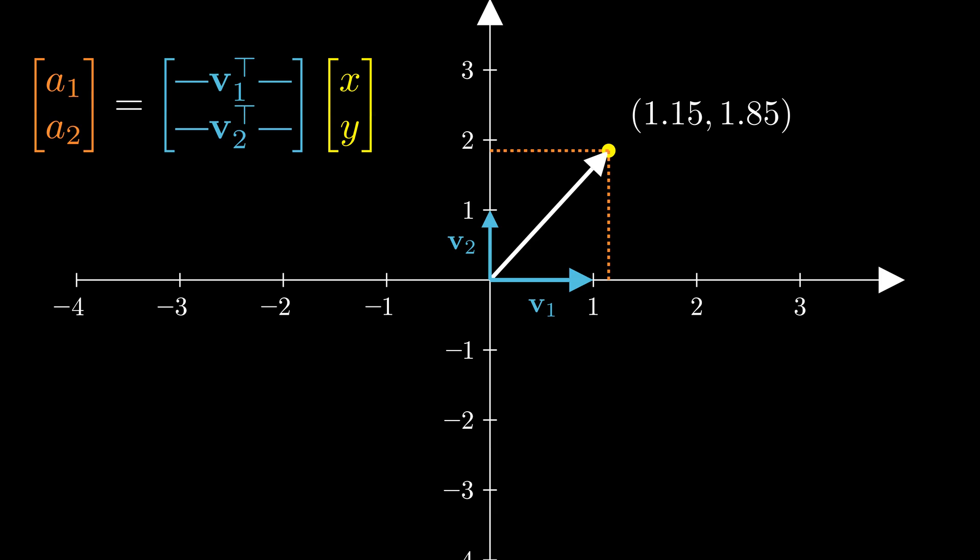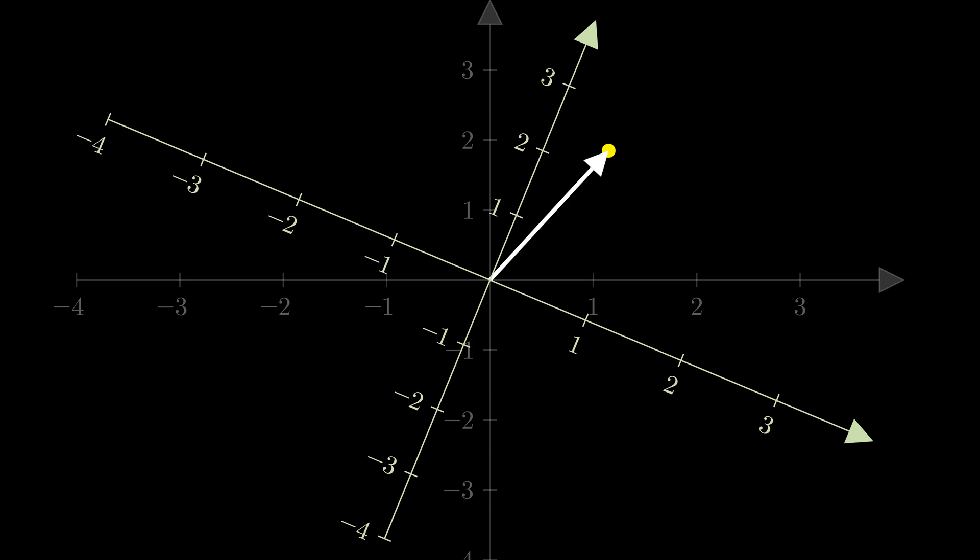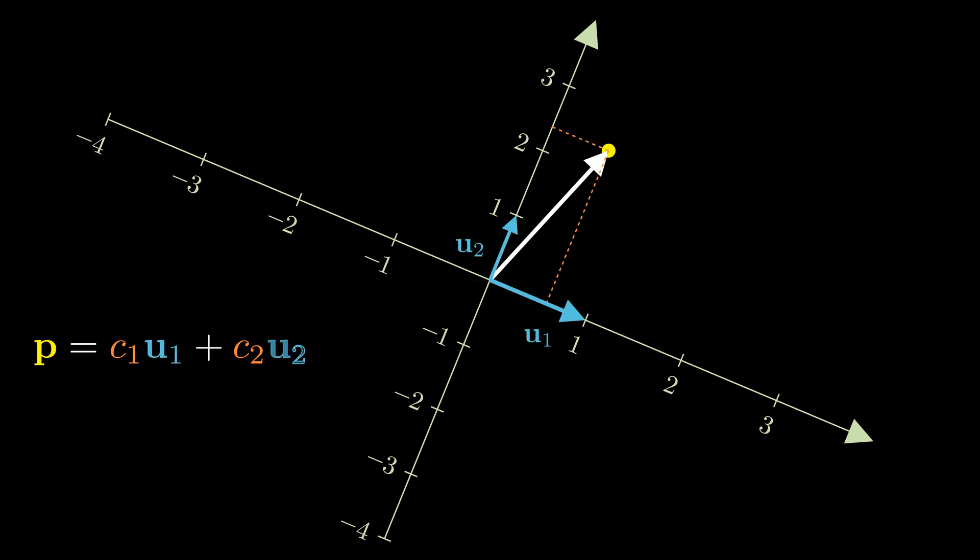Now this seems like overcomplicating something so straightforward. But this intuition will be crucial when we represent the same 2D vector p using different bases. Here we have new basis vectors u1 and u2. Similarly, we can express p as a linear combination of u1 and u2.